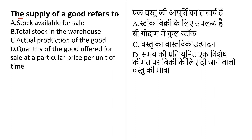Next question: supply of goods refers to — options: stock available for sale; total stock in the warehouse; actual production of goods; or quantity of goods offered for sale at a particular price per unit of time. Supply refers to the quantity of a good offered for sale at a particular price per unit of time. The term supply refers to the entire relationship between quantity supplied and price. The correct answer is option D.